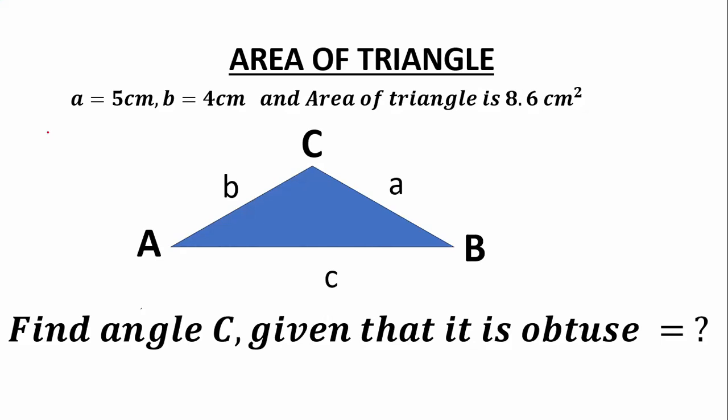In this video, we are asked to find the value of angle C. If we are given a to be equal to 5 cm, b to be equal to 4 cm, and the area of the triangle is 8.6 cm², we will find the angle C given that the angle is an obtuse angle. So let's begin.